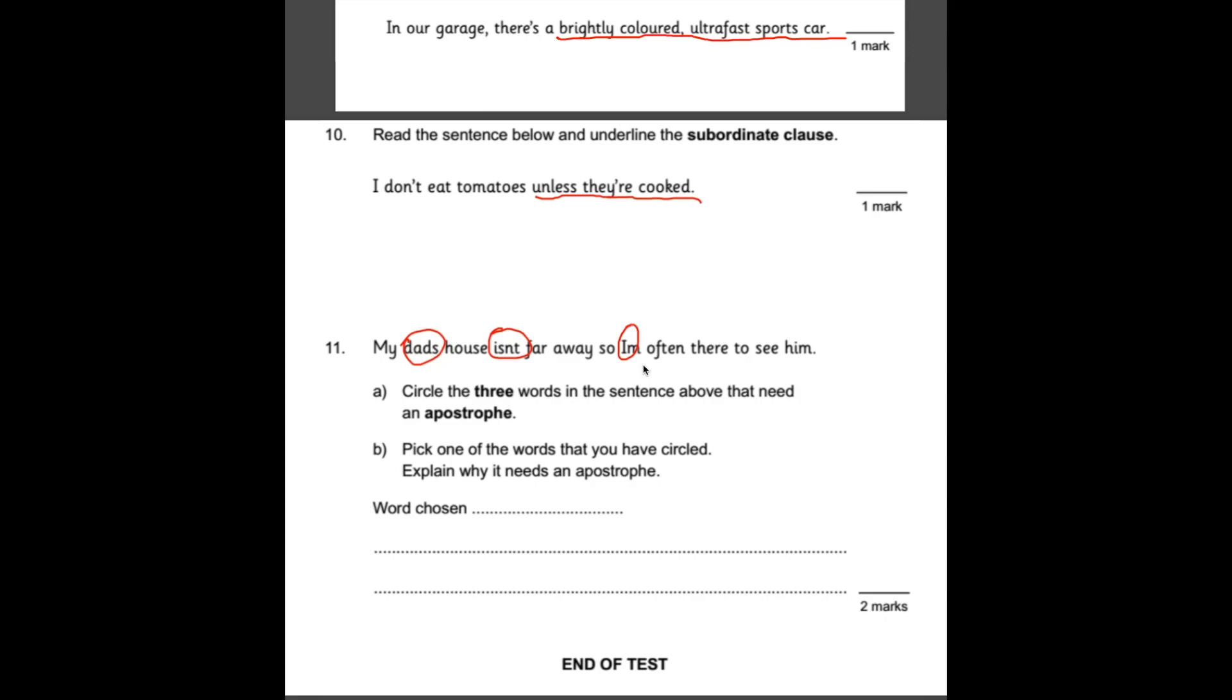And B, it says pick one of the words you've circled and explain why it needs an apostrophe. Just like I've just mentioned. All you need to write in there is, for example, if you chose dad's, it would be a possessive apostrophe. Because it's talking about the house that dad owns. You need to be quite clear on that. Also, if you chose isn't or I'm, they're contractions. They're words that are short for and then give you a full word that it's short for.